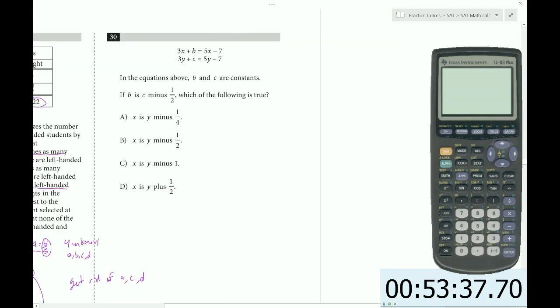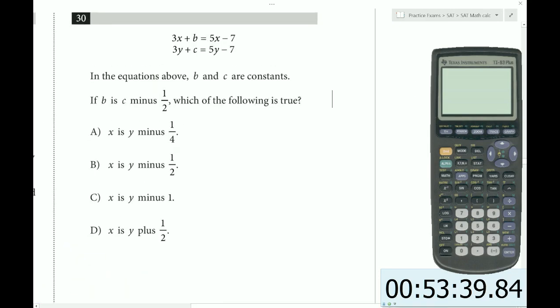Alright, question 30. 3x plus b equals 5x minus 7, 3y plus c equals 5y minus 7. In the equations above, b and c are constants. If b is c minus 1 half, which of the following is true?